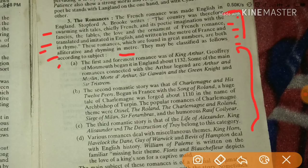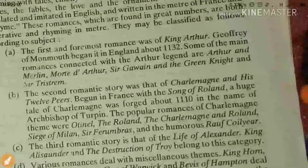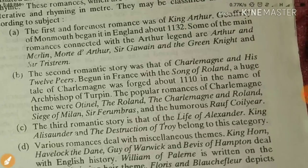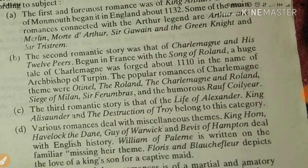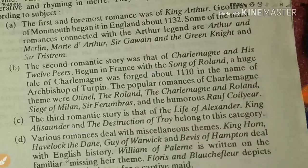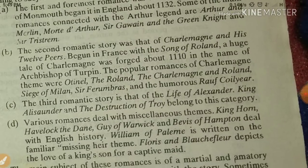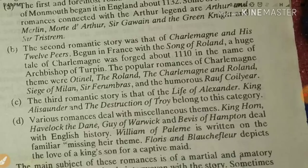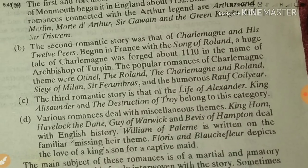Romances may be classified according to their subject matter. The first and greatest subject was King Arthur. Geoffrey of Monmouth began writing of Arthur in England around 1132. Some of the main Arthurian romances are Arthur and Merlin, Morte d'Arthur, Sir Gawain and the Green Knight, and Sir Tristrem. Remember these names as they will come up again in later discussion.